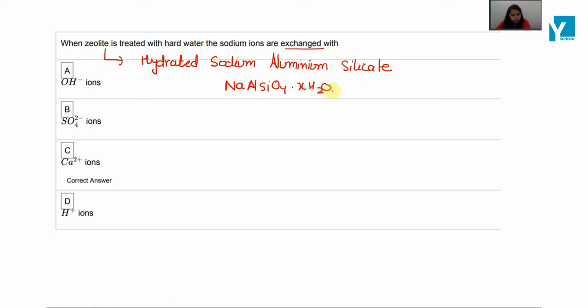Now when it is treated with hard water, according to the question, hard water is one type of water in which ions like calcium 2 positive and magnesium ions are present, which are responsible for its hardness.